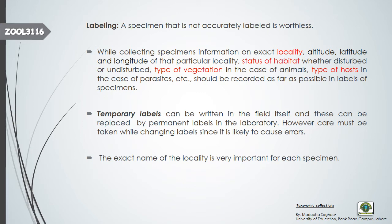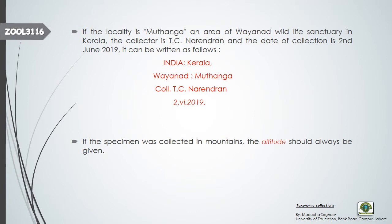Next, we discuss temporary labels. When collecting too many specimens in the field, there is a chance of error and mixing up specimens later in the lab, so temporary labels must be made. Temporary labels can be written in the field itself and then replaced by permanent labels in the laboratory. Care must be taken while changing labels since errors are likely to occur.